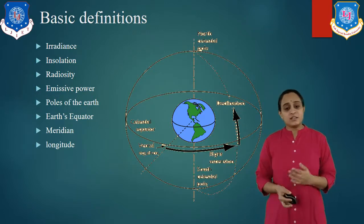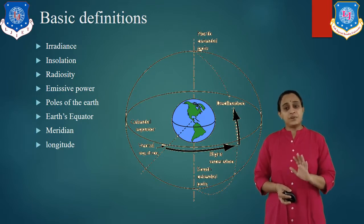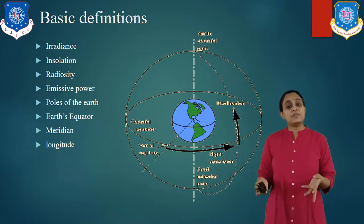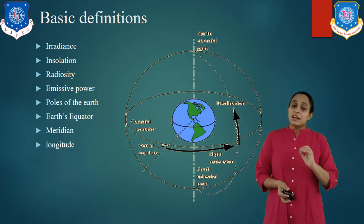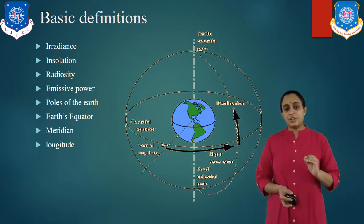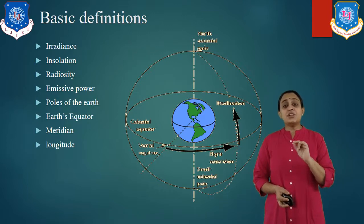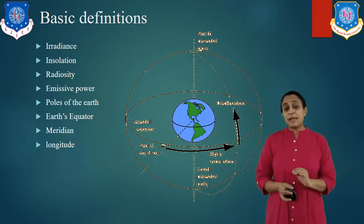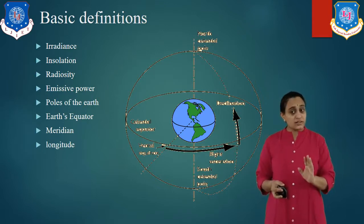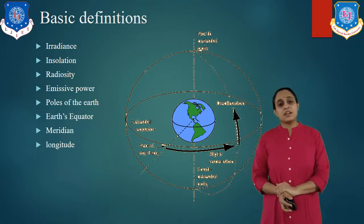Now let us study about sun and earth angles. Solar radiation at Earth's surface is different at different locations. It changes during daytime as well as season due to specific sun-Earth geometry. To perform calculations associated with flux density of solar radiation on flat and inclined surfaces, we must be able to evaluate the angle of the sun from any position on the Earth at any time of the day.